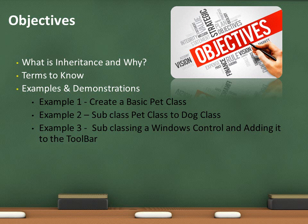The vast majority of this lecture is going to be demonstration. First, I'd like to create a basic class — we're going to create a pet class. Then in the next example, we're going to subclass that and create a dog class, showing the advantages of subclassing and how it can save us code. Then I'm going to take it to a real-world approach: we'll grab a Windows Control, subclass it, add it back to my toolbar, and use that control over and over again in the application.